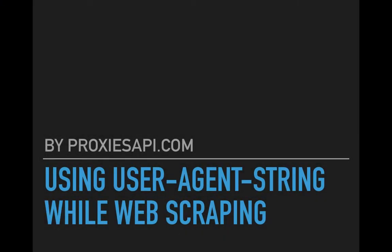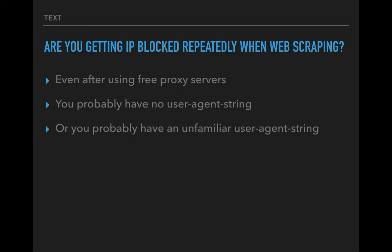Hey guys, a quick but fun video on how to use user agent strings while web scraping. I'm the founder of ProxiesAPI.com, a rotating proxy service. If you're getting IP blocks repeatedly when web scraping — even after using free or anonymous proxy servers — the reason you're getting blocked is probably because you are not using a user agent string, or you are sending the default string that comes with a scraper which identifies itself as a bot.